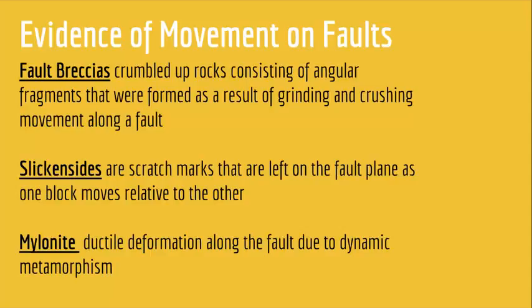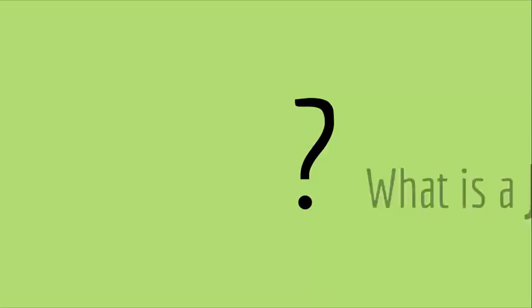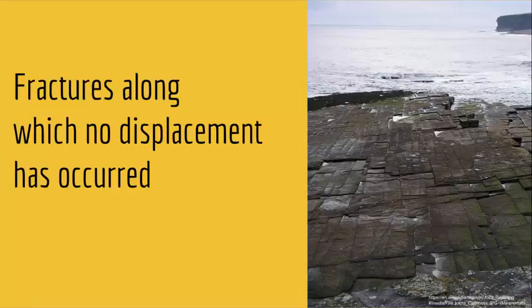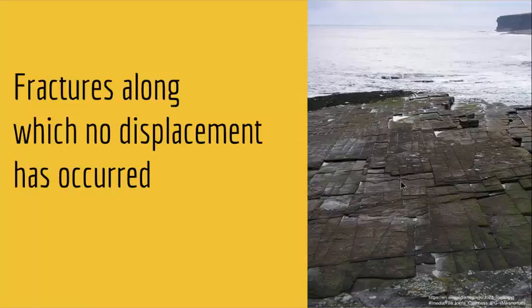But what if no movement occurs? That is a joint. A joint is a fracture along which no displacement has occurred. In joints, there is no movement. As you can see in this picture, there are fractures in the rock but no apparent displacement. So joints have no displacement, but faults have displacement in the fractured rock.